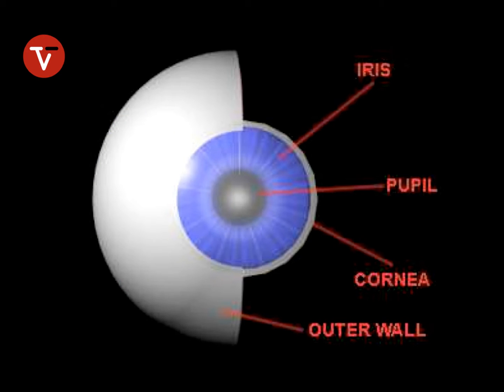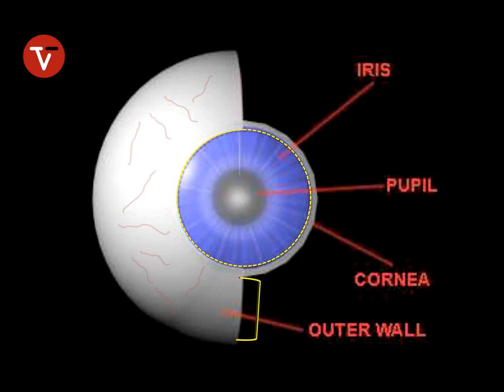As we examine the eye from the outside, we can see several things. The outer wall of the eye, which is white in color, is called the sclera. The sclera is covered by a thin, clear membrane that has blood vessels associated with it, called the conjunctiva. An extension of the sclera across the central part of the eye is called the cornea — a clear structure we consider the clear outer window of the eye.